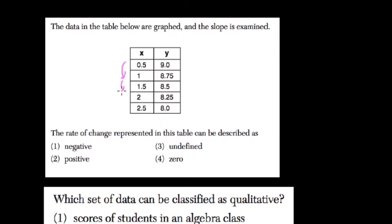As x is going up and up and up, what's y doing? y is going constantly down. So that's called a negative slope, or negative correlation, or negative rate of change.